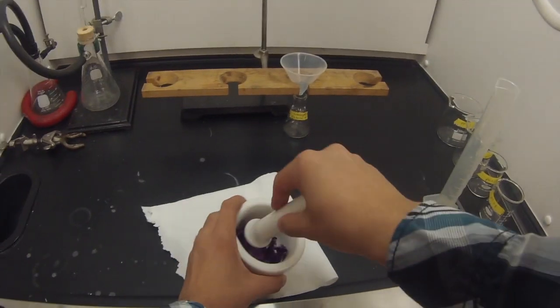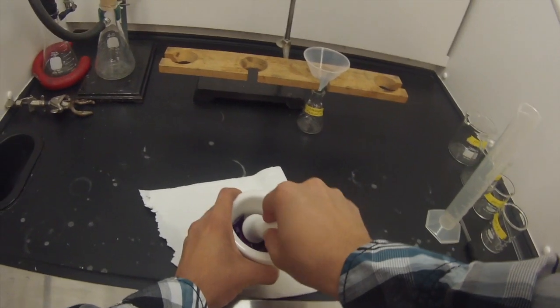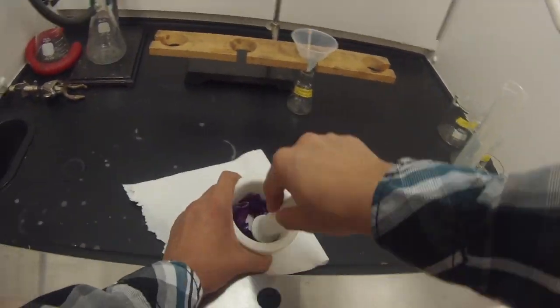So this is the Acids and Bases Lab. To start, you'll take six pieces of cabbage and grind them together in a mortar and pestle for five minutes.